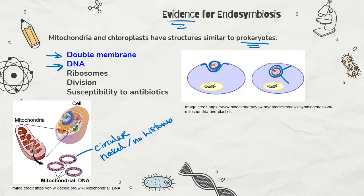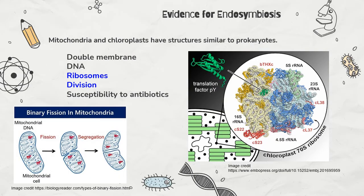Histones are those proteins that DNA wraps around — they help organize the DNA in our nucleus. There are no histones on the DNA in mitochondria or chloroplasts. Also, mitochondria and chloroplasts have their own ribosomes, and those ribosomes are 70S ribosomes. This means they're a little bit smaller than the ribosomes we have outside our mitochondria and chloroplasts — our free ribosomes and the ribosomes bound to our rough ER are 80S ribosomes, a little bit bigger.